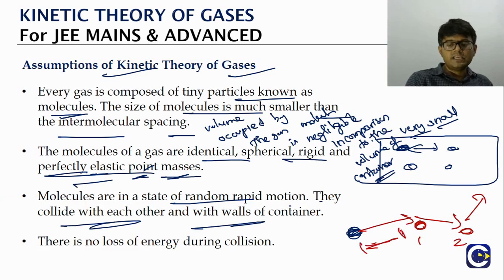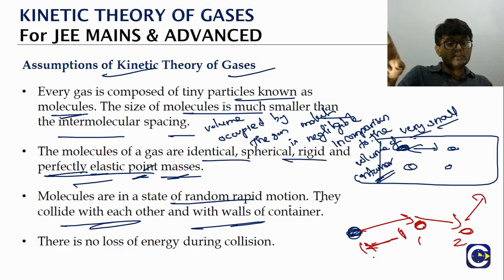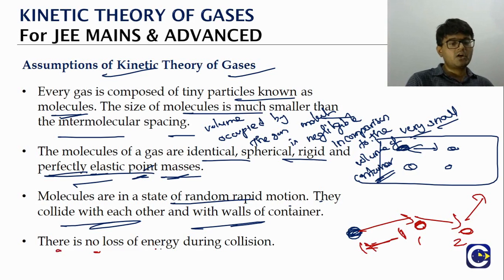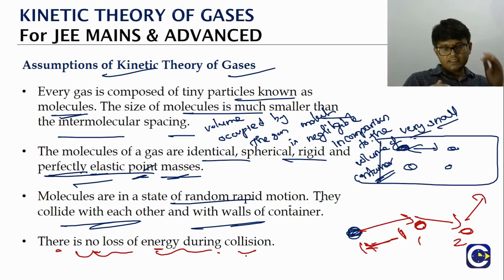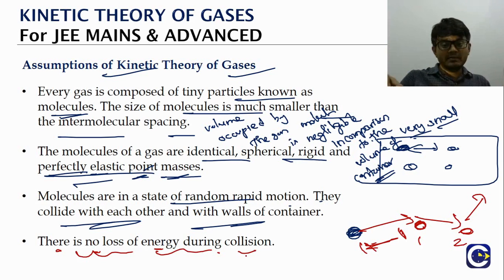Between two successive collisions, a gas molecule moves in a straight line with constant velocity. Overall, the motion appears as a random zigzag path. All collisions — between gas particles or with the walls — are perfectly elastic, meaning there is no overall energy loss. Energy may be transferred between particles, but the total kinetic energy is conserved.